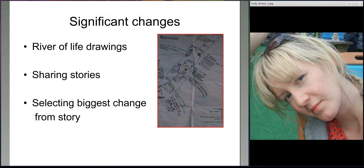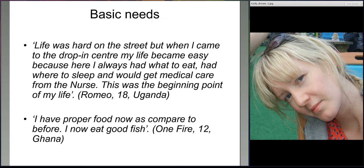To find out about these changes, children and young people were asked to make river of life drawings. These drawings allowed young people to draw the key events and people in their lives from the point in time they joined the support organisation to where they were today — including key people, key events, key activities, any event that made a difference to them. Children were then asked if they would like to share their stories with the group and were asked to select the most significant change from their story that they had experienced.